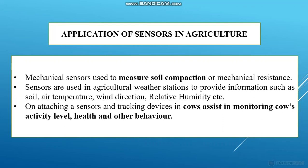Mechanical sensors are used to measure soil compaction and mechanical resistance. Sensors are also used in agricultural weather stations to provide information such as soil temperature, air temperature, wind direction, and relative humidity.